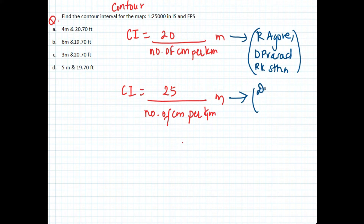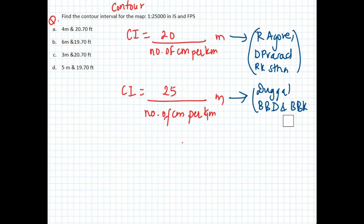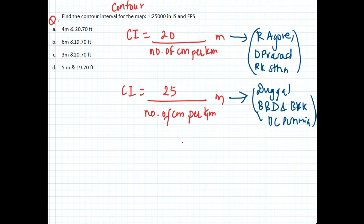The CI = 25 formula is found in books like Gole and Nepali writers Barat Bahadur Dhakal, Bess Bahadur Karki, Bess Kumar Karki, and B.C. Poonmay. Today in this problem we are using the first formula: CI equals 20 divided by number of centimeters per kilometer.